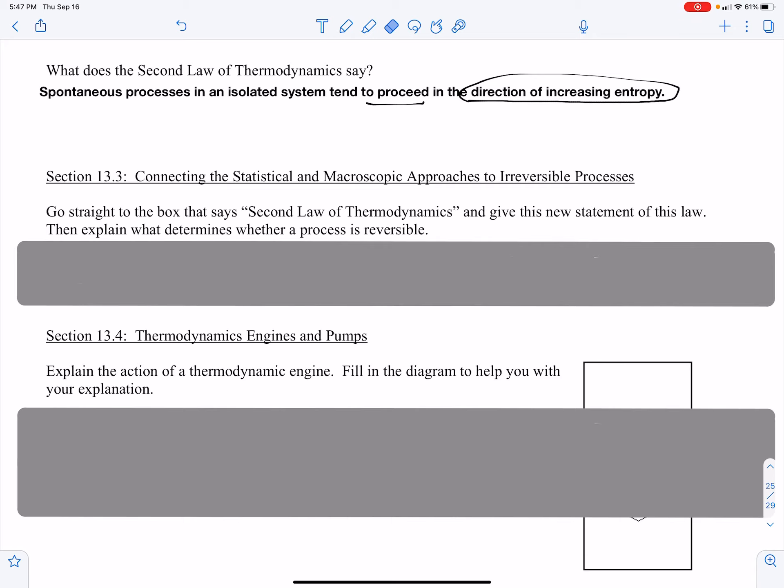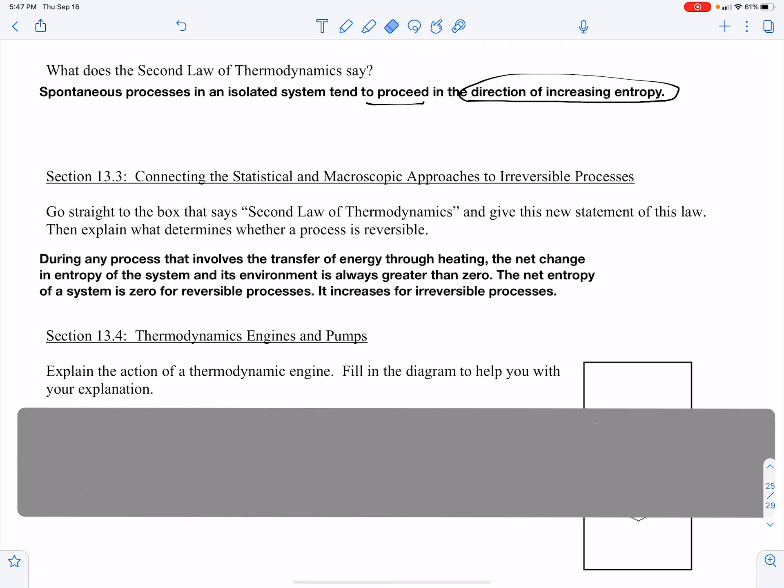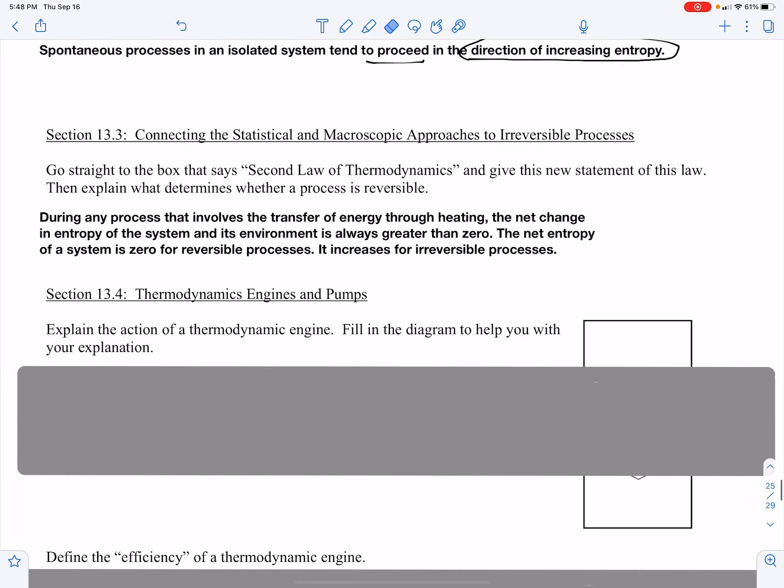Section 13.3 Connecting Statistical and Macroscopic Approaches to Irreversible Processes. During any process that involves the transfer of energy through heating, the net change in entropy of the system and its environment is always greater than zero. If the net entropy of the system is zero, that would be a reversible process. The net entropy will always be greater than zero for irreversible processes.